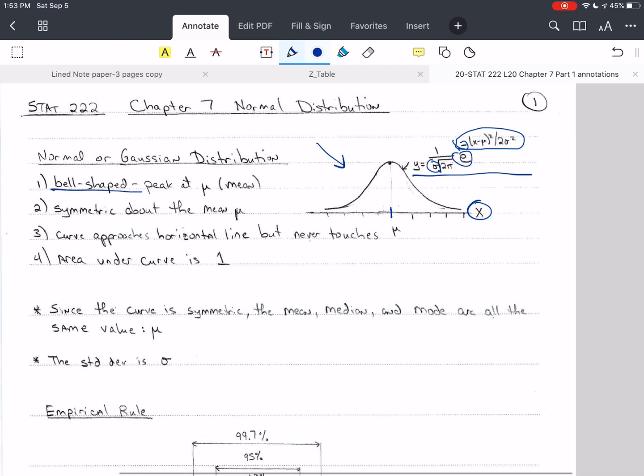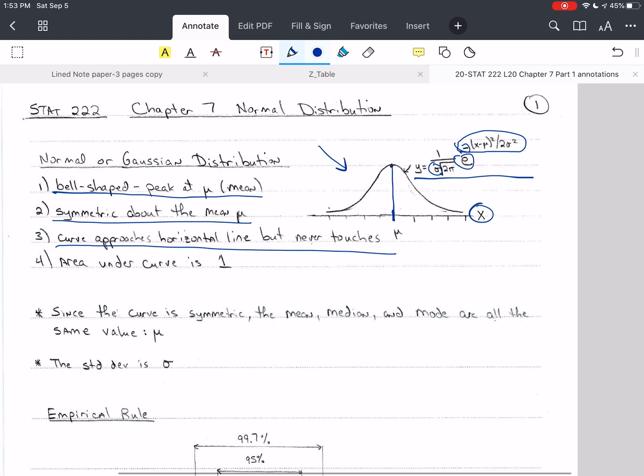It is bell-shaped. It looks kind of like a bell if you look at the curve. And the peak is at mu. That's also the mean. It's symmetric about the mean mu. That tells you that you can draw a line right down the center, and both sides are identical except flipped. So if you folded this down the middle, both sides should match up perfectly. That makes it symmetric. The curve approaches the horizontal line. So the curve for the distribution approaches the horizontal line here and here. But it never touches. That means it keeps going to infinity and to negative infinity.